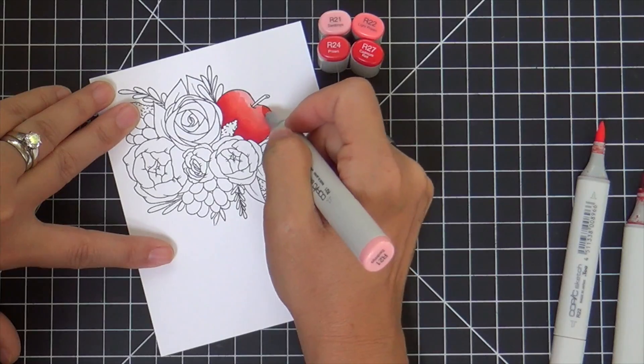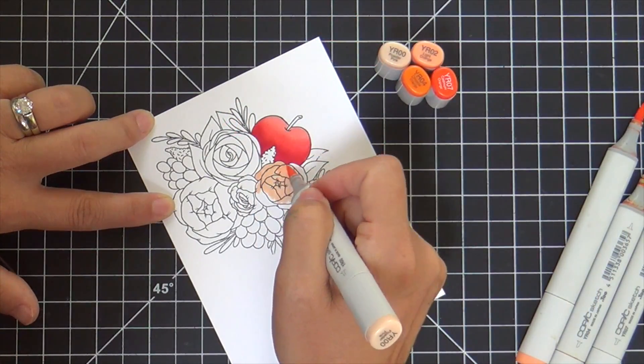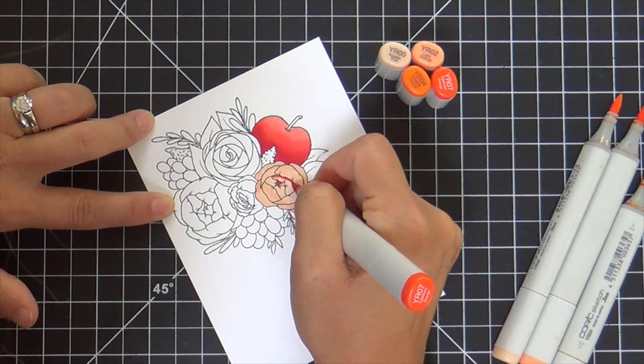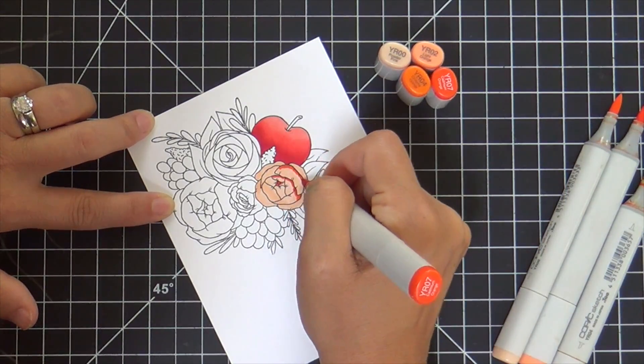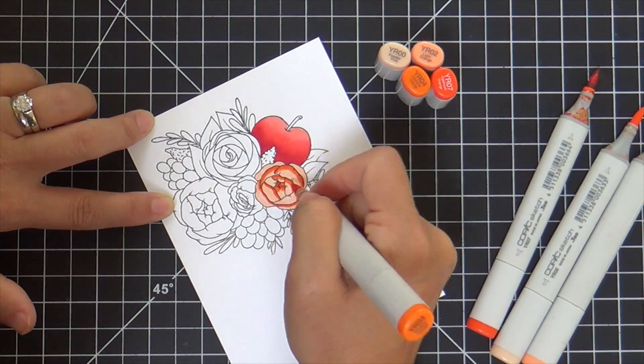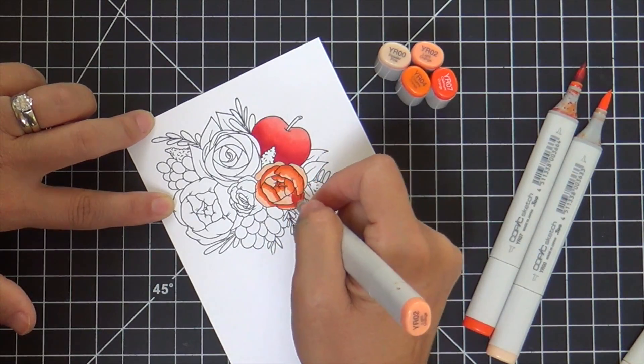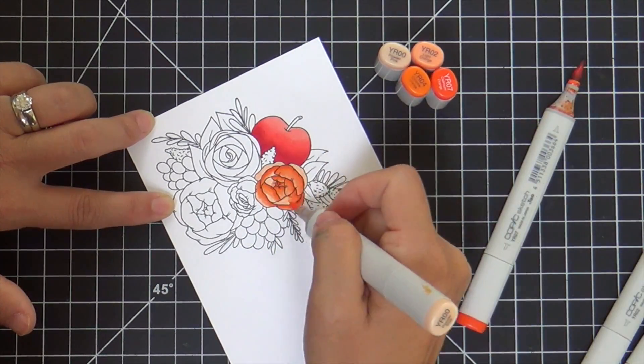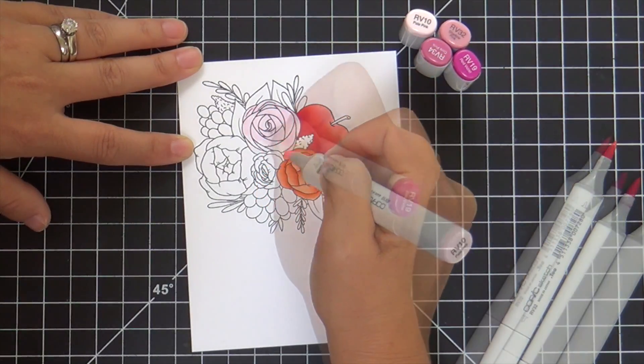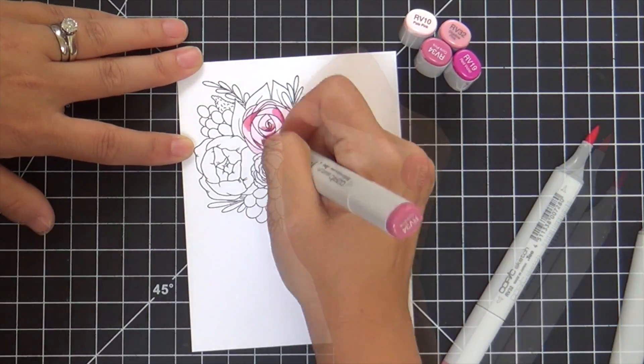As you can see, I sped this up super fast because it took me a long time to color. There are so many different ways you could color this—no-line watercolor, no-line colored pencil, Zig Clean Color. I pulled out the Copics because to me that's the safest route, but it does take me a while.